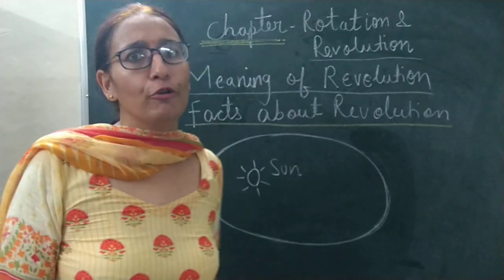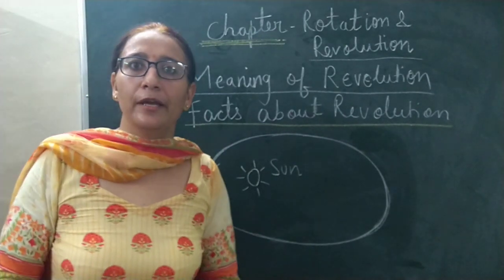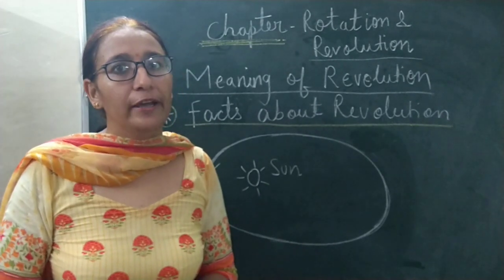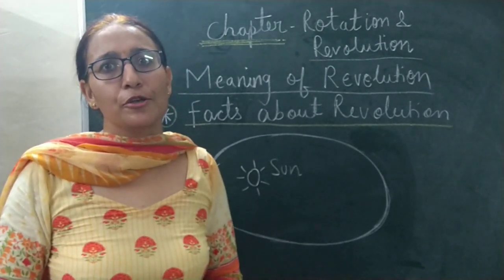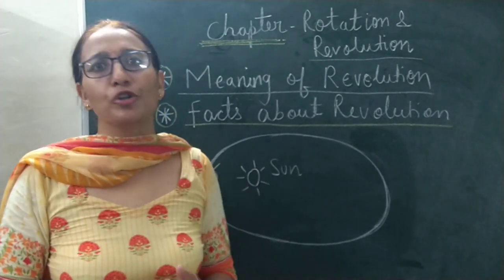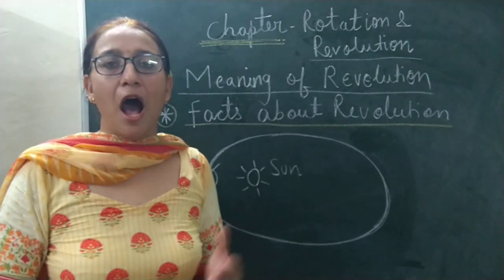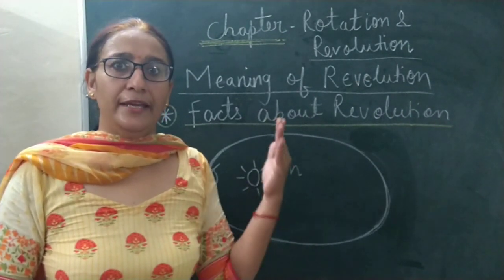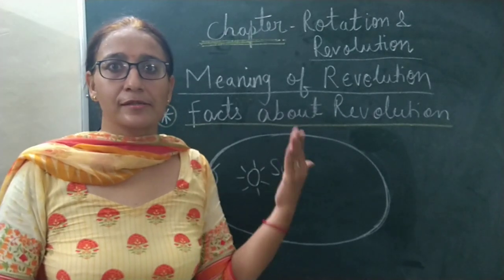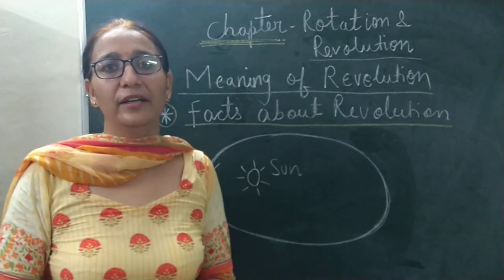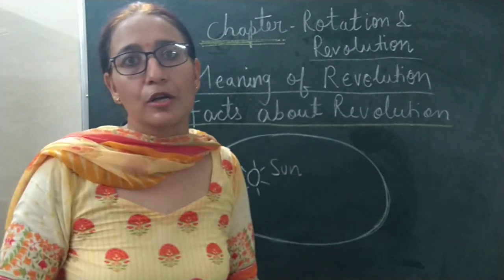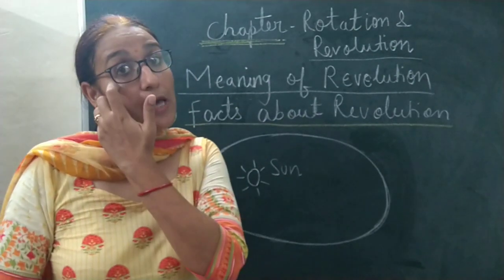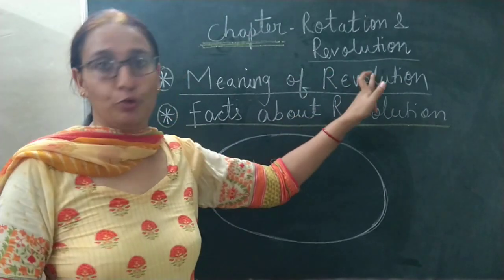Before going to explain, I think you all are enjoying rainy season. So I have a question for you kids: how are seasons caused? There are different seasons — summer, winter, autumn, etc. How are these seasons caused? Seasons are caused due to revolution.